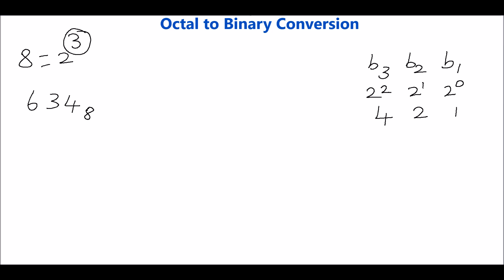So our aim is to convert octal to binary. We have to individually convert the digits 4, 3 and 6 into equivalent binary number.